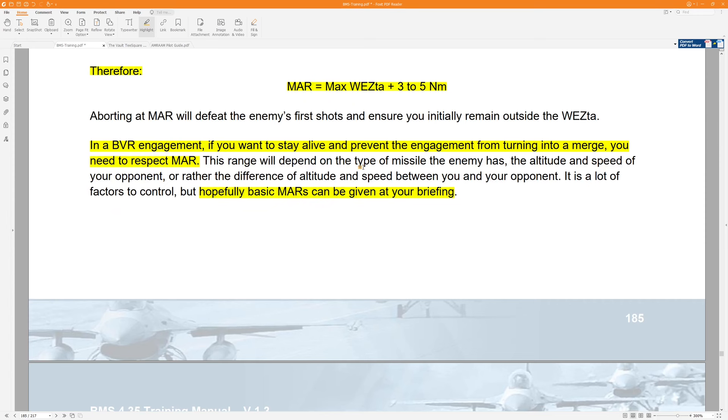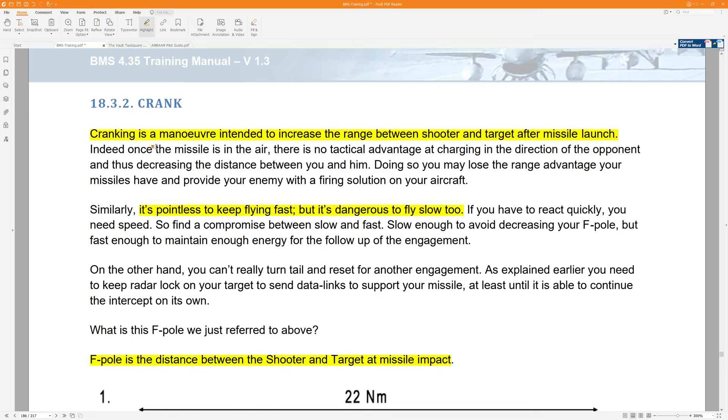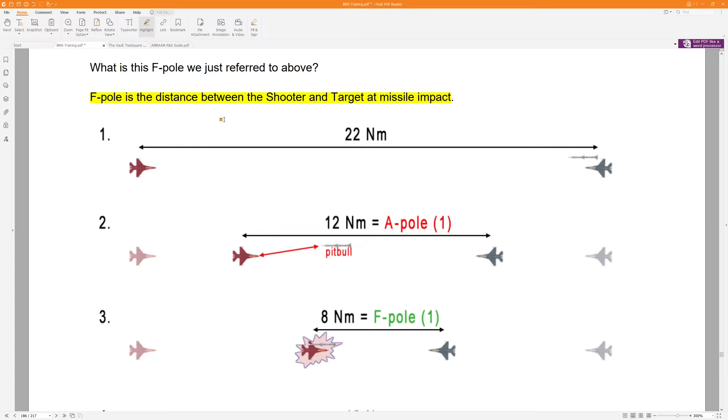So back to the training document. Now that we've briefed the MARs, the minimum abort ranges on these two aircraft, let's talk about the crank maneuver real quick. This is a maneuver intended to increase the range between the shooter, us, and the target, the bandit, after our missile launch.